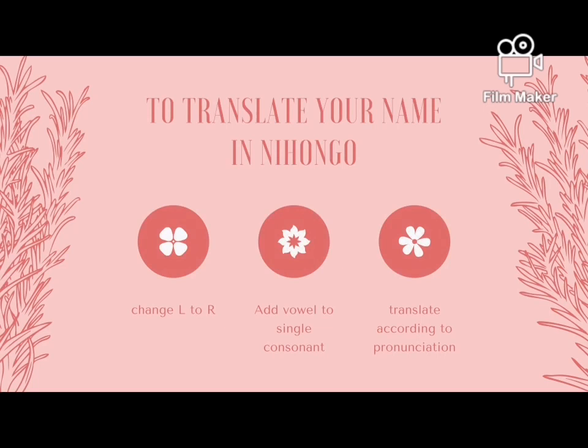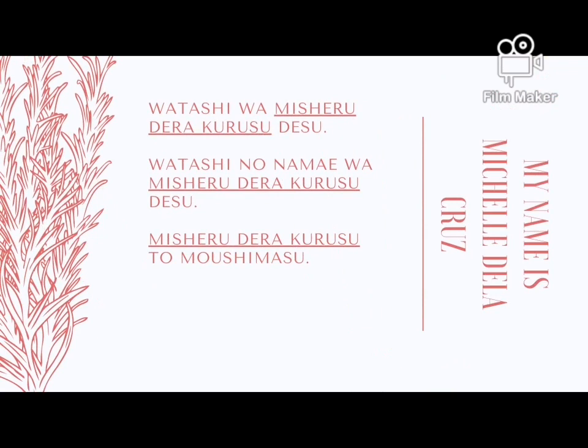We have three rules when translating your name into Nihongo. First, if you have the letter L, change it to letter R — for example, Alan becomes Aran. Second, please add a vowel to any single consonant — for example, Christine becomes Karisitin. And last, translate your name according to pronunciation — for example, Joel becomes Joeru.